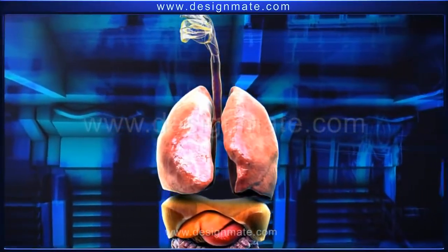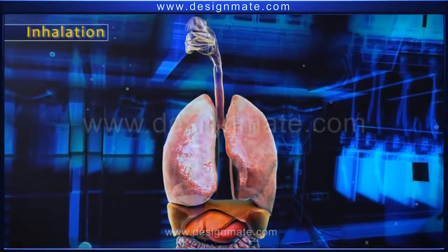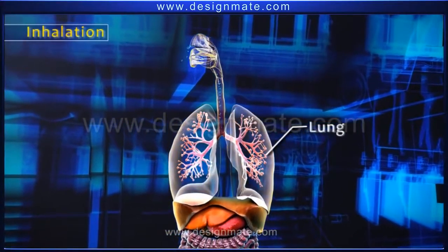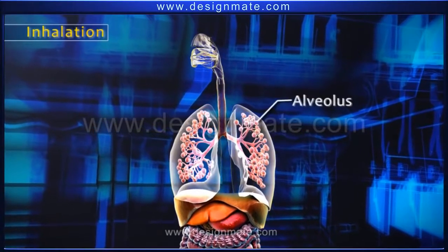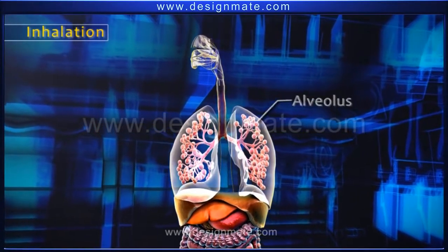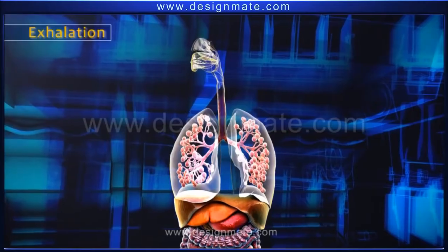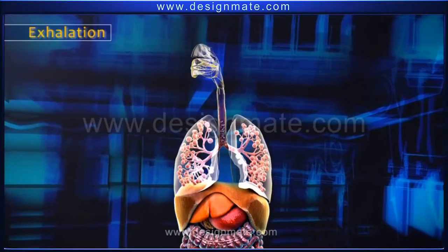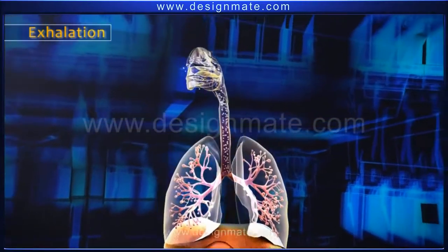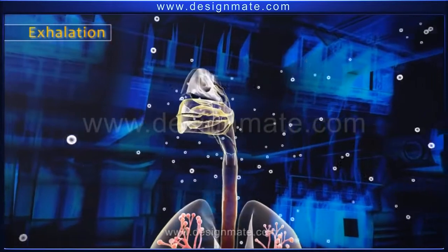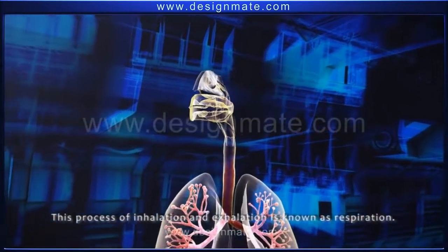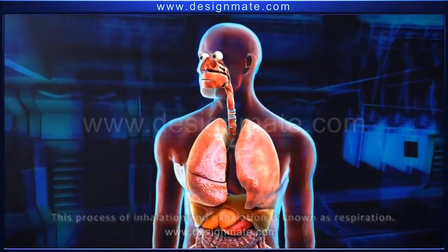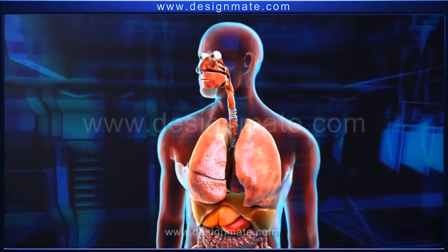The process of breathing in air rich in oxygen is called inhalation. After the contraction of the muscular diaphragm, the lungs expand and air rushes in, resulting in the inflation of the alveoli. During exhalation, the diaphragm moves up and the lungs contract, causing the alveoli to deflate and forcing air out. This exhaled air is rich in carbon dioxide. This process of inhalation and exhalation is known as respiration, which occurs approximately 20 times per minute.